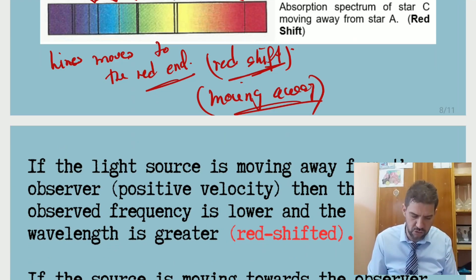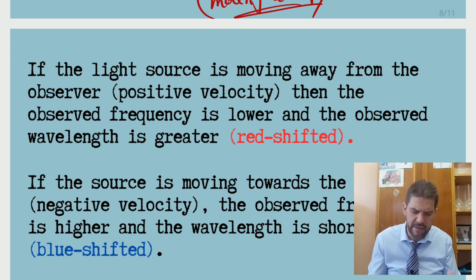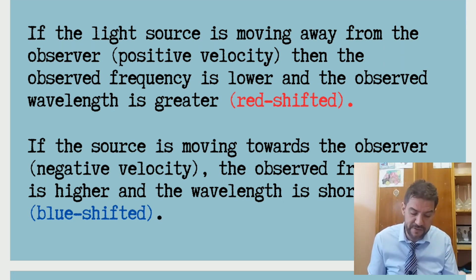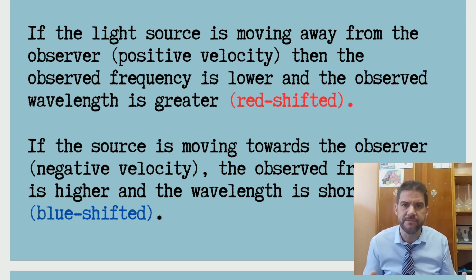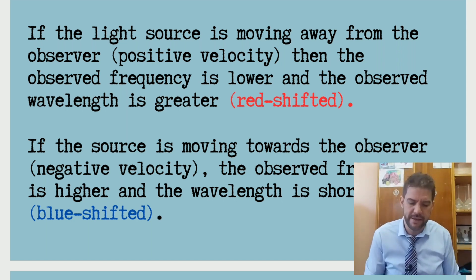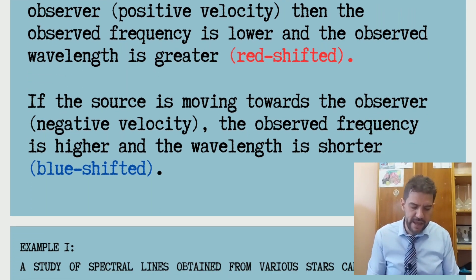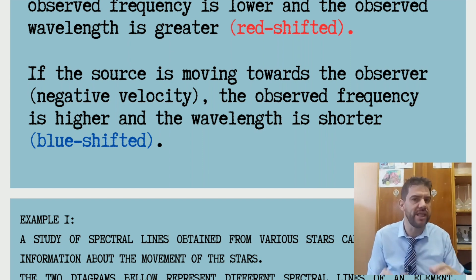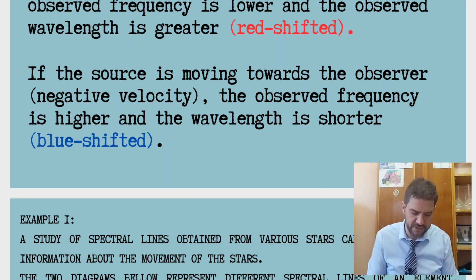Here is a summary from the examination guideline. If the light source is moving away from the observer, the observed frequency is lower and the observed wavelength is greater — that is red shift. If the source is moving toward the observer, the observed frequency is higher and the wavelength is shorter — that is blue shift.